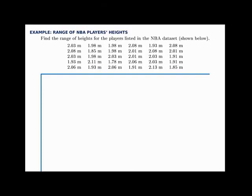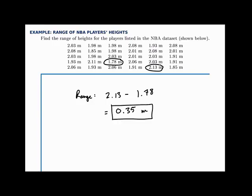Here we'll find the range of the heights of players in the NBA dataset. The range is simply the difference between the smallest and largest values. Scanning through, the smallest value is 1.78 meters and the tallest is 2.13 meters. The range is 2.13 minus 1.78, which equals 0.35 meters. A larger range means data is more spread out; a smaller range means more tightly clustered. These players are all relatively tall, so 0.35 meters is a fairly small range.